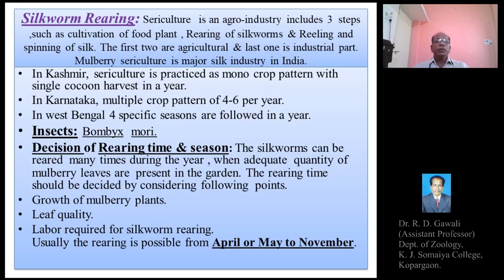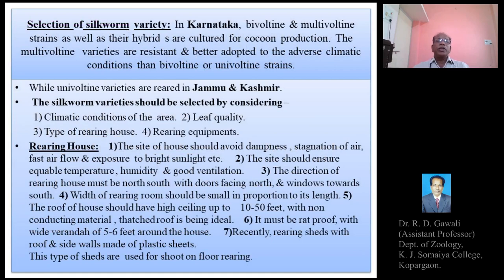Good morning friends. In the last lecture, we explained about the varieties of silkworms that can be selected on the basis of agro-climatic conditions of the region, such as univoltine, bivoltine, or multivoltine strains of the mulberry silkworm belonging to the genus and species Bombyx mori. We also explained about the decision of rearing time and season, and the selection of silkworm varieties for sericultural practice.